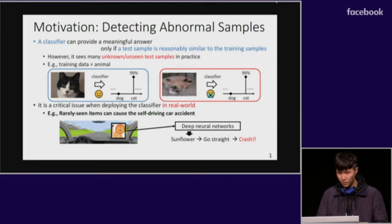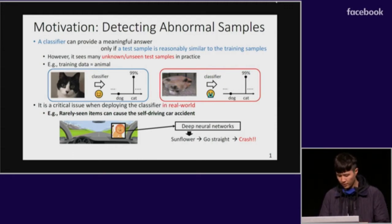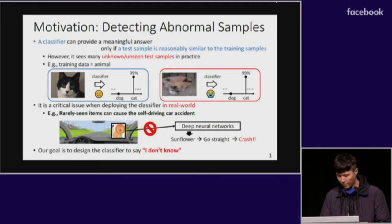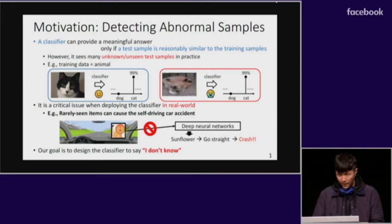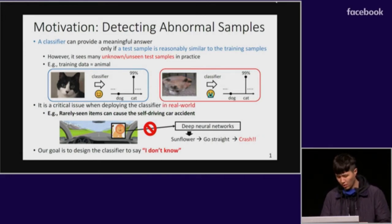For example, consider an object classifier for a self-driving car. If the classifier misclassifies some unseen item, a car accident might happen. However, if we can detect such unknown samples very effectively, it is possible to prevent a car accident. Motivated by this, our goal is to design the classifier to say 'I don't know' when the decision from a classifier is uncertain.